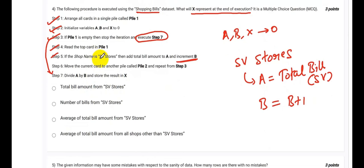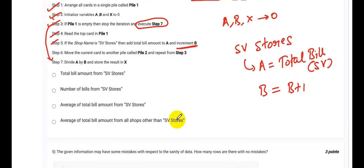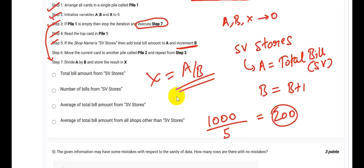Divide A by B and store the result in X. This is when we reach the final card of the dataset. Now we are being asked what will X represent at the end of execution. X is equal to A by B. So let us say that the total bill is 1000 and if the number of cards are 5, then it will be 200. What is this 200 mathematically? This is the sum of total bill and this is the number of bills. This in mathematics is said to be the average or the mean. Therefore, the average of total bill amount from SV Stores will be the right answer.